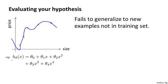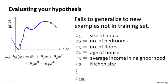So how do you tell if a hypothesis might be overfitting? In this simple example, we could plot the hypothesis h of x and just see what was going on. But in general, for problems with more features than just one, for problems with a large number of features like these, it becomes hard or maybe impossible to plot what the hypothesis function looks like. And so we need some other way to evaluate our hypotheses.